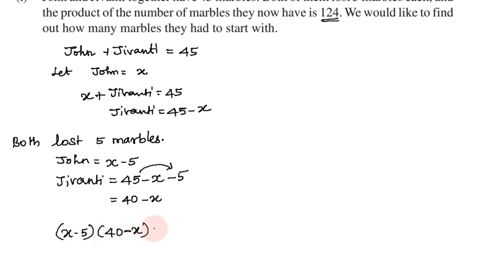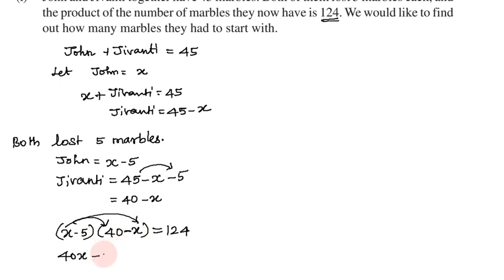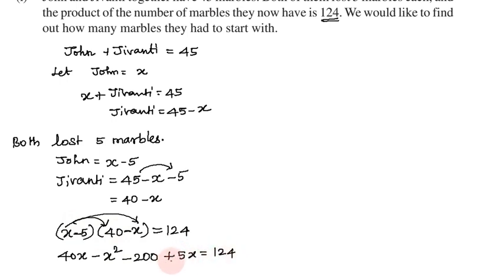Now the product is 124. If you multiply the two marble counts, you get 124. So: (x minus 5) into (40 minus x) equals 124. Expanding: x into 40 is 40x, minus x squared, minus 5 into 40 is 200, plus 5 into x is 5x, equal to 124.